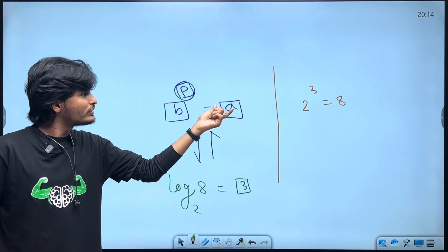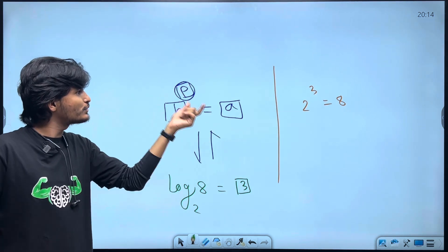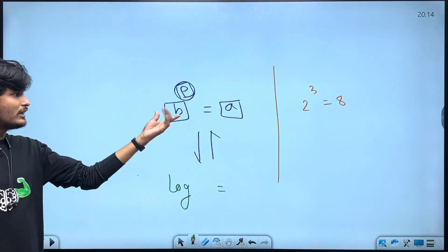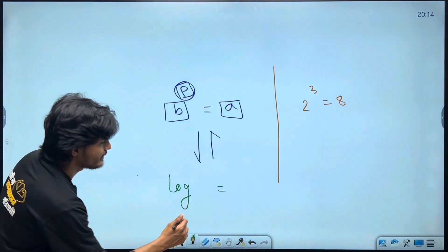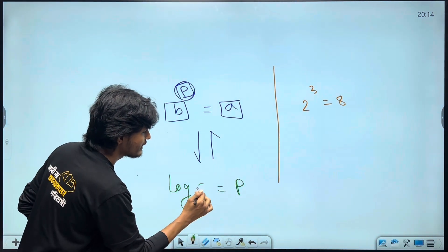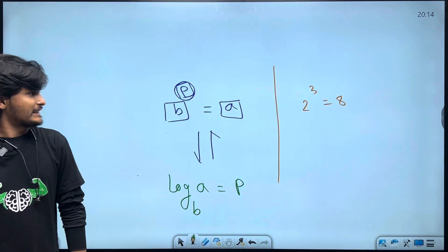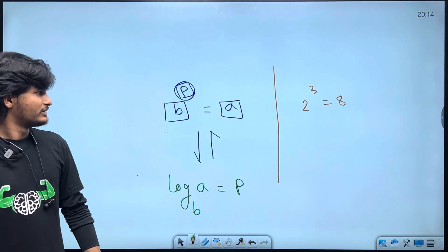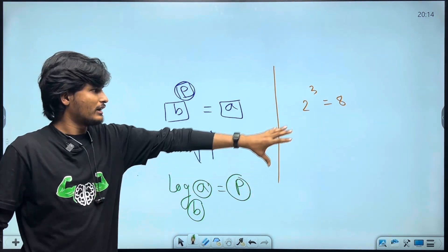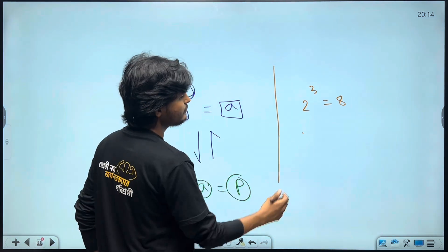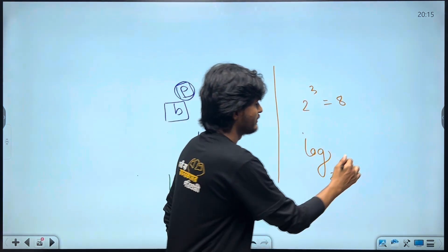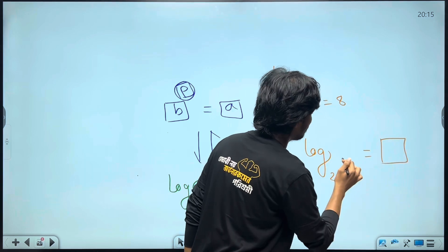So we want to say: 2 to the power of what gives 8? We want that power. Given this example, what power of 4 gives 8? We are looking for that power value.